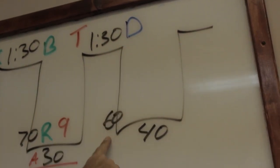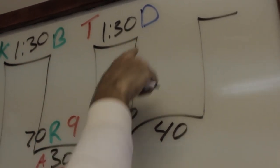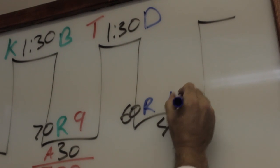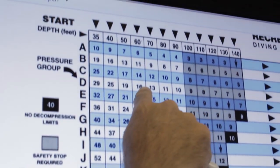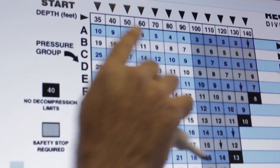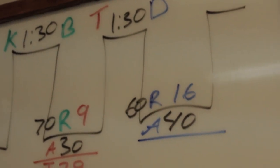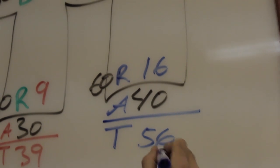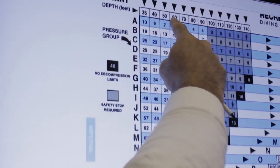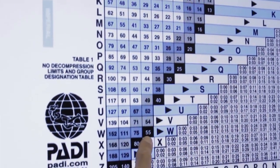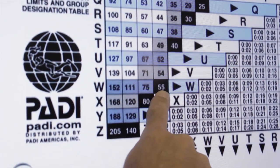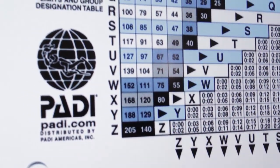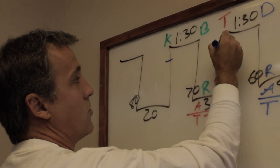As pressure group D, he's gonna make a dive to 60 feet. D has a residual nitrogen of 16 minutes at 60 feet. His actual dive was 40 minutes, so his total dive time will be 56 minutes. Now we go to the dive table and see what new pressure group that gives us — 60 feet for 56 minutes. He went over. We don't make up another group, we just give him an X — he went over. He's only allowed to stay down 55 minutes; he went over by one minute.